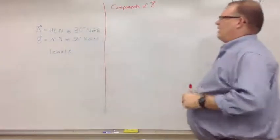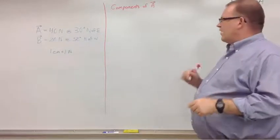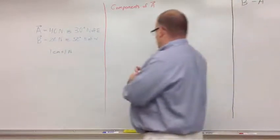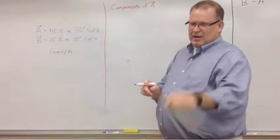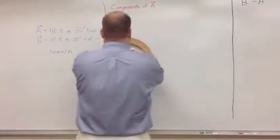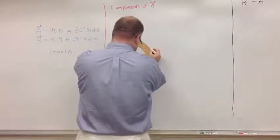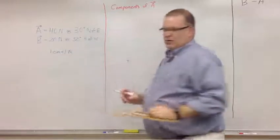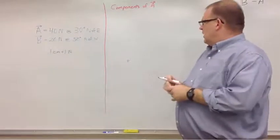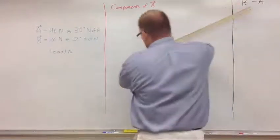As we recall, vector A, 40 newtons at 30 degrees north of east. So I've got to draw my vector first. Origin and angle. 30 degrees mark north of east. Then I need to draw 40 centimeters out for my 40 newtons.